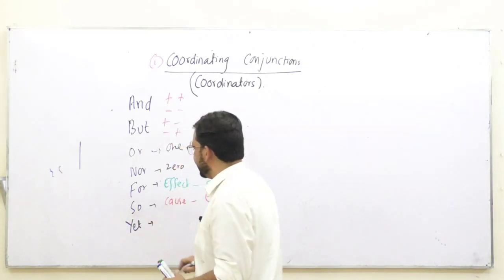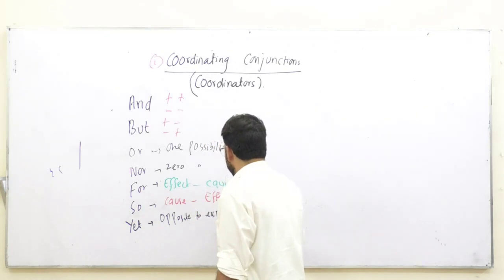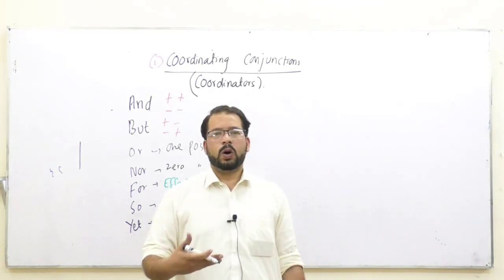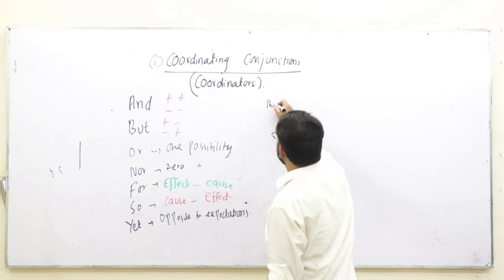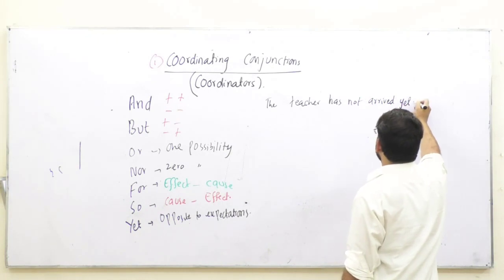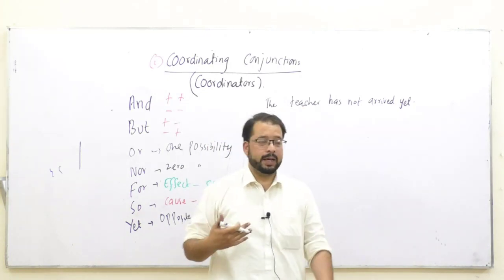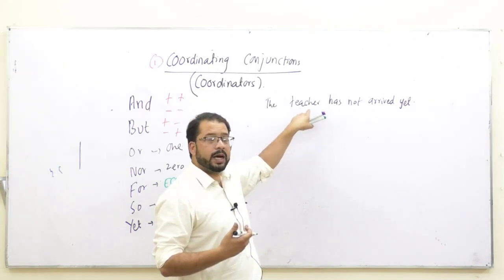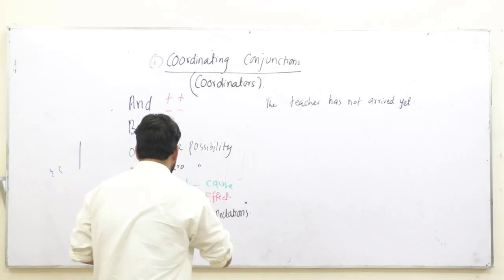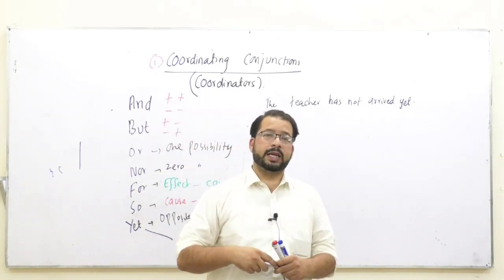Last jo hamare paas coordinating conjunction hai, that is 'yet'. 'Yet' ko hum use karte hain opposite to expectations ke liye. Opposite to expectations ka matlab yeh hai ke jab aap yeh samajh rahe hon ke kaam hua hoga aur woh kaam nahi hua. For example: 'The teacher has not arrived yet.' Dear viewers, yaad rakhen yahan par 'yet' as an adverb mein use kiya hai. Asal mein main yeh expect kar raha tha ke teacher abhi tak aaye hue honge lekin teacher abhi tak nahi aaye hain, is wajah se humne uske liye 'yet' lagaya hai. Yahan par hamare paas ek aur conjunction bhi hai jisko hum kehte hain 'still'. 'Still' hamare paas subordinating conjunction hai. Ab 'still' ko bhi hum opposite expectation ke liye use karte hain.